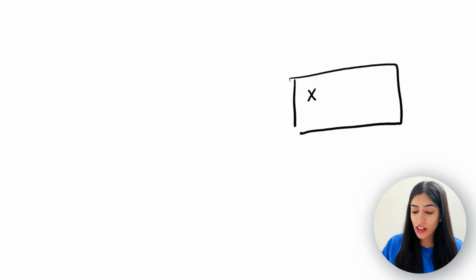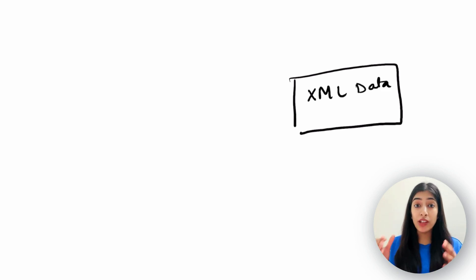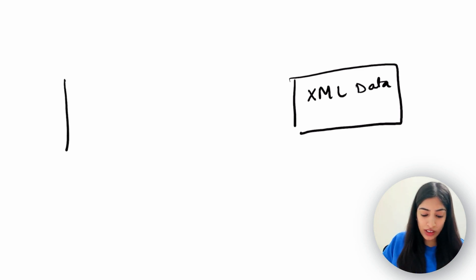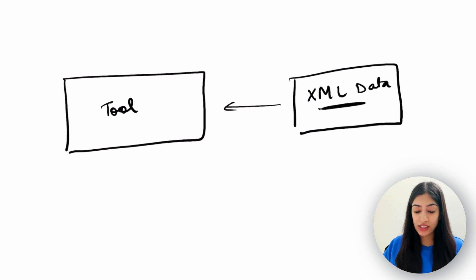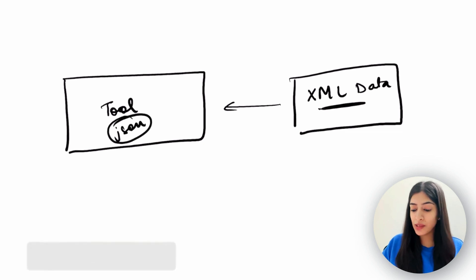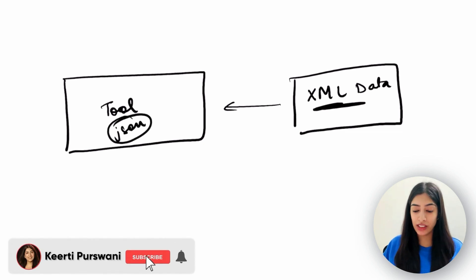To take a coding-related example, let's assume that we have some data in XML format. We have some XML data and we want to analyze it, so we decide to use a data analytics tool. We are going to pass the data to this tool and analyze our XML data. But the problem is the tool that we are going to use expects the data in JSON — XML is not compatible with it.